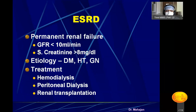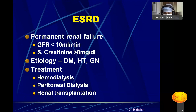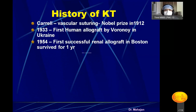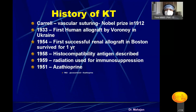Once ESRD is diagnosed, there are three types of treatment: hemodialysis, peritoneal dialysis, and kidney transplantation. Hemodialysis and peritoneal dialysis are temporary measures — they will not give a complete cure. A kidney transplant is the permanent treatment option, and transplantation started way back in 1912.